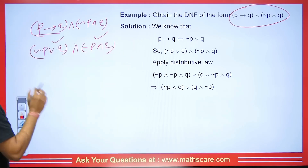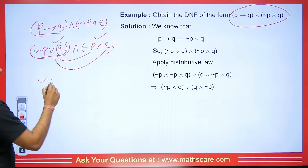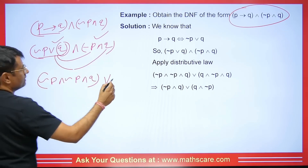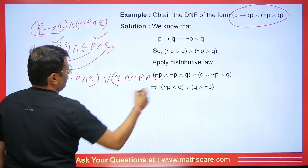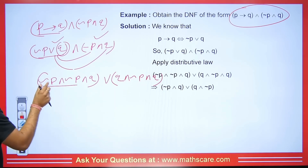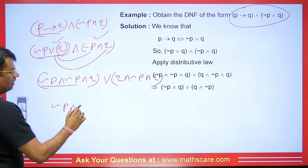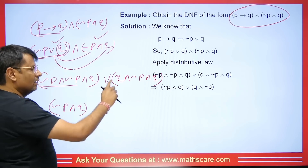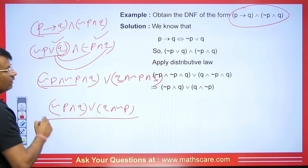Now we will use the distributive law. This one will go with this and this will also go with this. So here it will be (negation of P AND negation of P) OR (Q AND negation of P) AND negation of Q. See, OR is in the middle, so we need conjunction at this place. By the idempotent law, whenever we have the same statement AND between itself, its value equals itself. So this will be negation of P AND Q. Here we have Q AND Q with AND between them — by idempotent law that becomes Q.